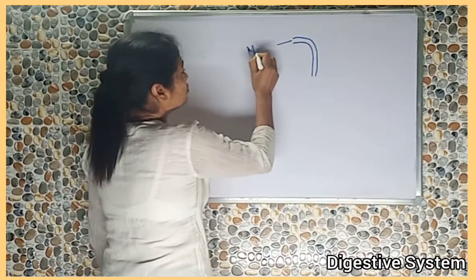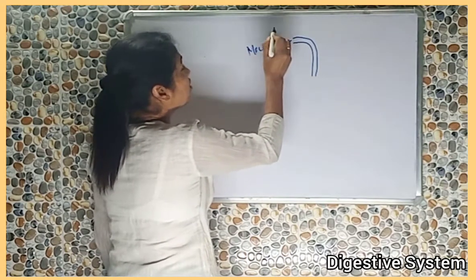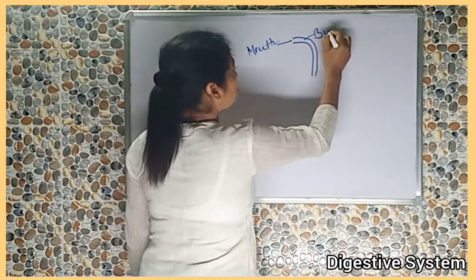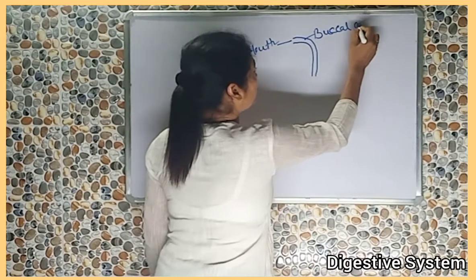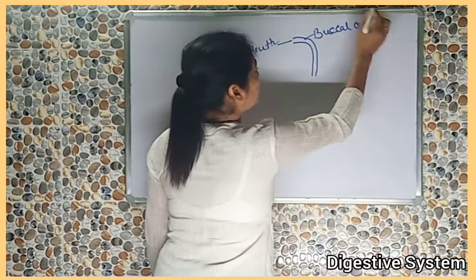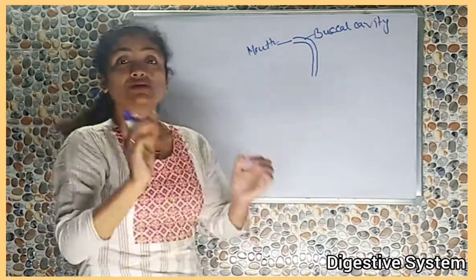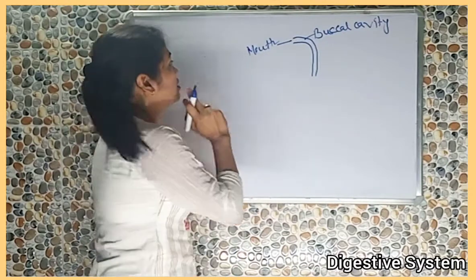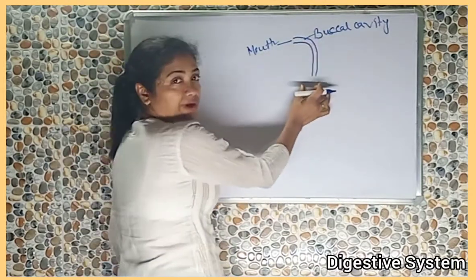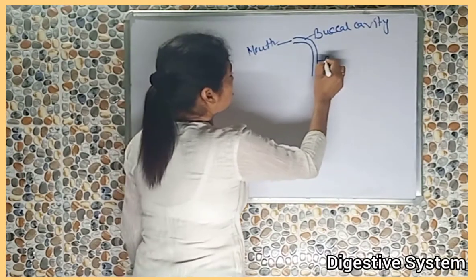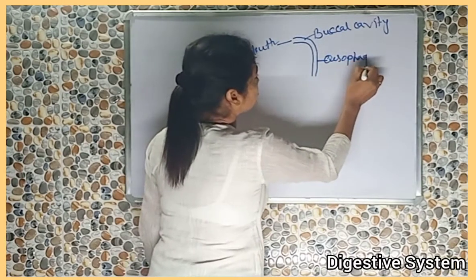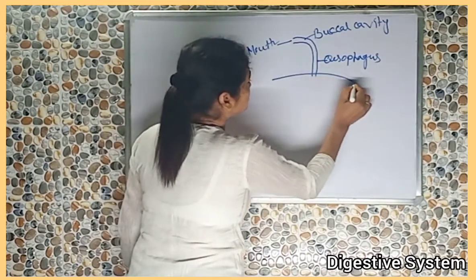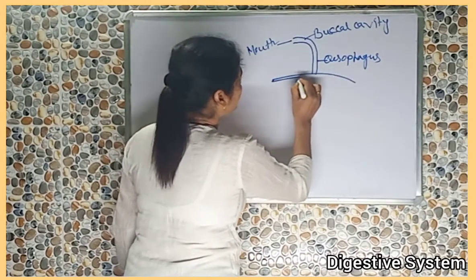The alimentary canal is divisible into: number 1, the mouth, for ingestion of food, and the buccal cavity, which is the spacious chamber with 2 jaws. And this is the esophagus.